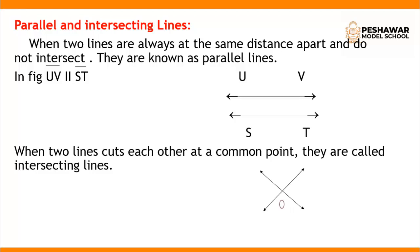Now come to intersecting lines. When two lines cut each other at a common point, they are called intersecting lines. Intersecting lines form a cross shape and cut each other at a common point. Parallel lines, on the other hand, remain at the same distance apart and do not intersect.